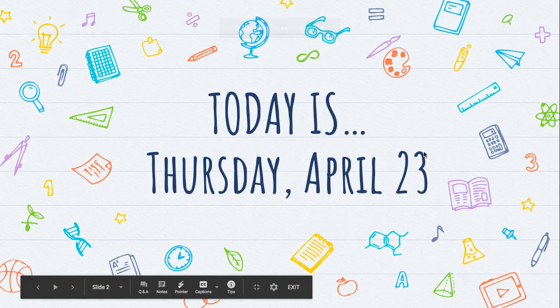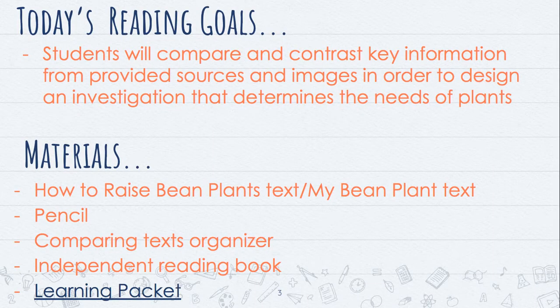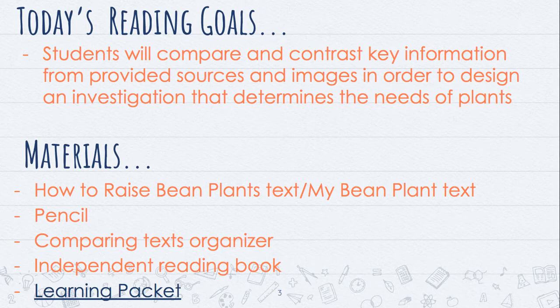Good morning second graders. Today is Thursday, April 23rd. The reading goal is the same. Your materials: you're going to need the How to Raise Bean Plants text and My Bean Plant text. You're going to need a pencil and you're also going to need the Comparing Text Organizer from the packet. If you haven't gotten your packet yet for whatever reason, you can write this organizer down on any piece of paper. It doesn't have to be the one in the packet.